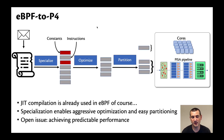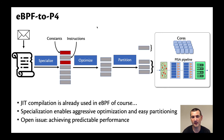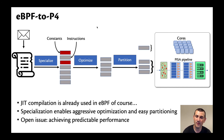Going the other direction, the challenge is to take a general purpose program — maybe written or compiled with eBPF — and accelerate it using a pipeline specified in P4. There are many ways to do this, but the approach I've been exploring with my group at Cornell is to use just-in-time compilation. JIT compilation is something the eBPF community is familiar with, and we think it's a good fit for accelerators too.